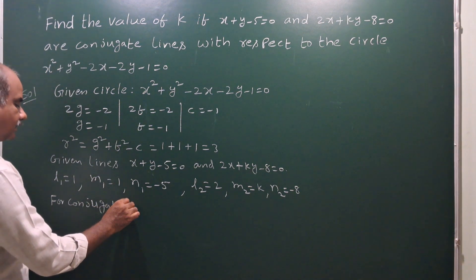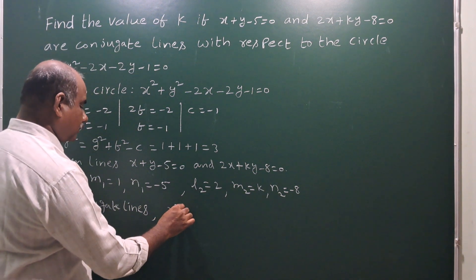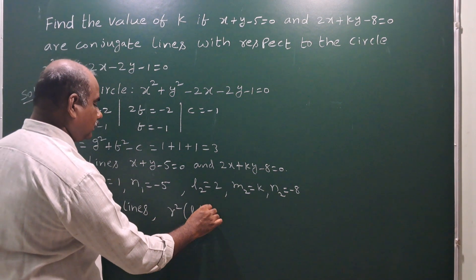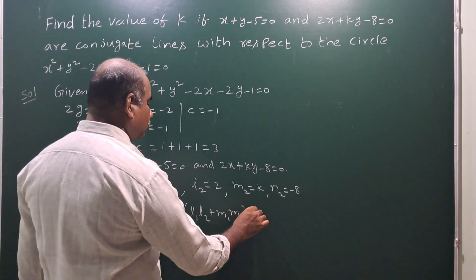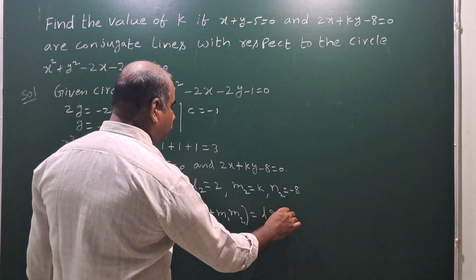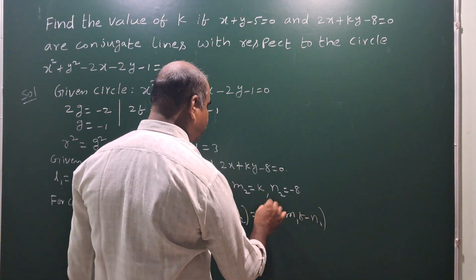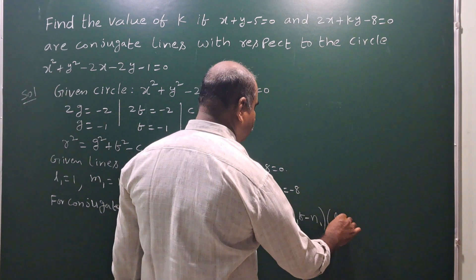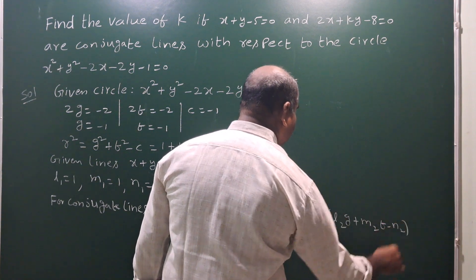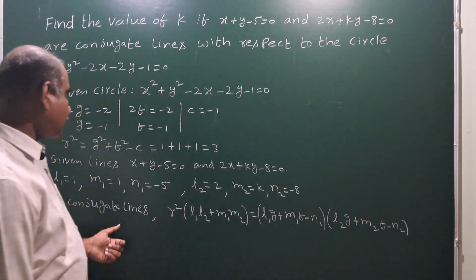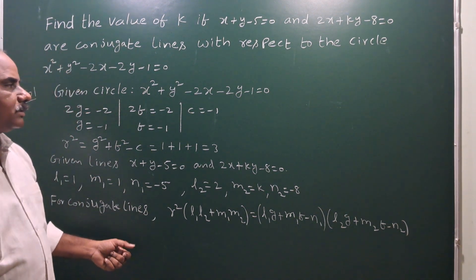For conjugate lines, the formula is: r squared into (l1·l2 plus m1·m2) equals (l1·g plus m1·f minus n1) into (l2·g plus m2·f minus n2). This is the formula we have to apply.